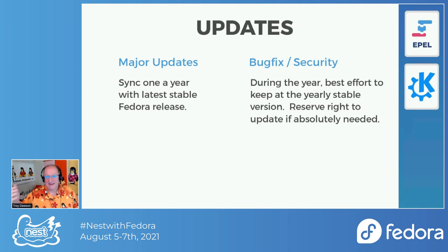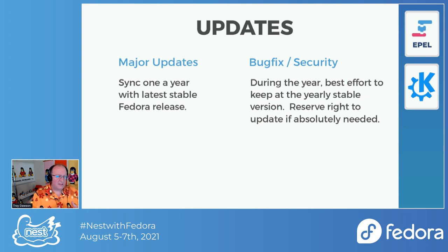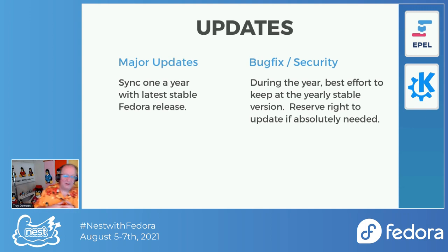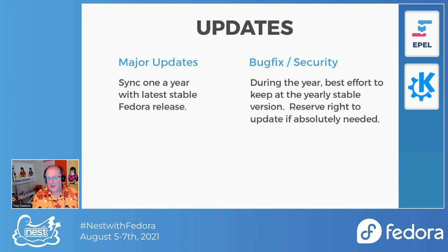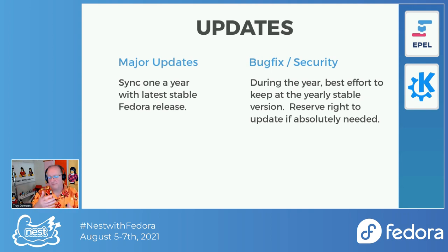Now that KDE is actually in EPEL, there's a few things we can do, and I'm excited for this. One of the major things is updates. I was really glad when the KDE SIG and I had a discussion about updates — how often should we do updates for KDE Plasma desktop in EPEL. After discussion, we decided on a one-year process. We'll leave the KDE Plasma desktop stable for one year, and then we'll update it to whatever is the latest stable Fedora release, which right now is Fedora 34.